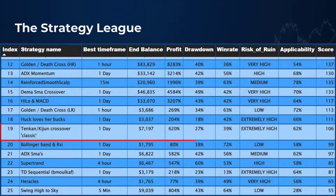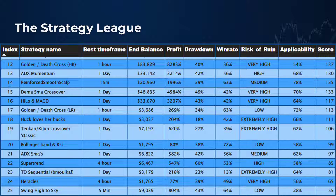This strategy ends up on the 19th spot in the overall strategy league. From all the lower-ranked strategies it has one of the lowest win rates, which causes it to score an extremely high risk of ruin. If you experience a losing streak you can easily wind up with a trading account that's too small to make any more trades with the bot, and that's a reason for concern. The rest of the scores are moderate. I think that using another indicator or method to confirm the real winning trades could easily improve this strategy.